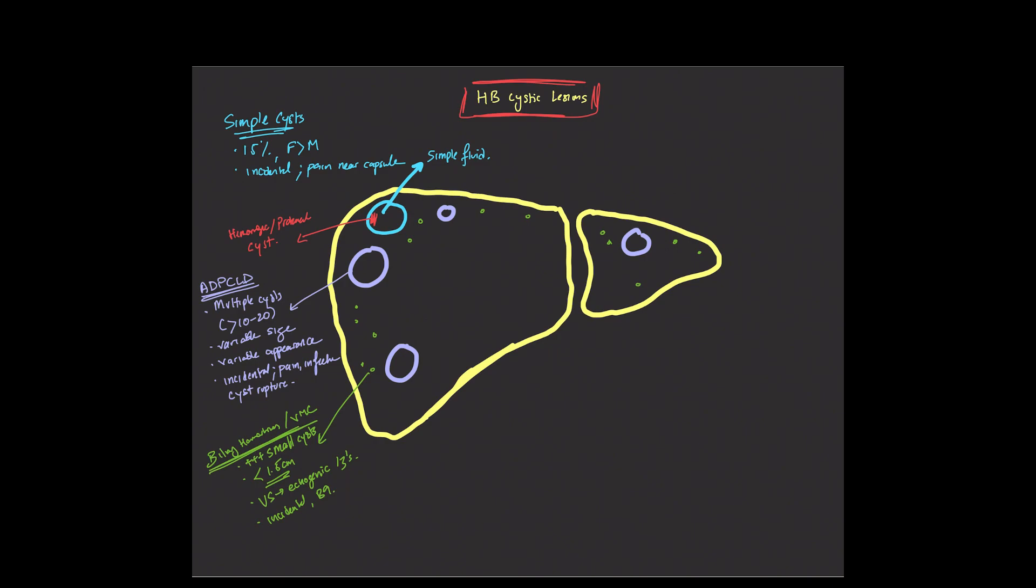And one of the things to differentiate from autosomal dominant polycystic liver disease is just the size of the cyst. With the autosomal dominant liver disease, a variable size scattered throughout the liver, biliary hamartomas, all really, really small in size, all typically less than 1.5 centimeters.